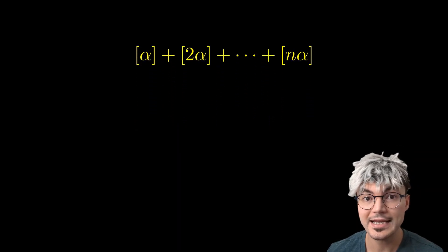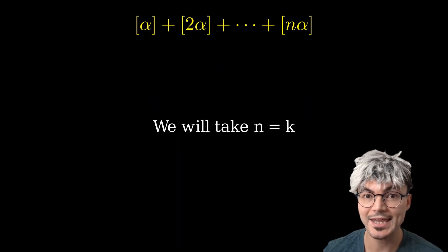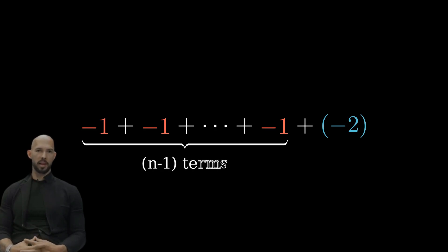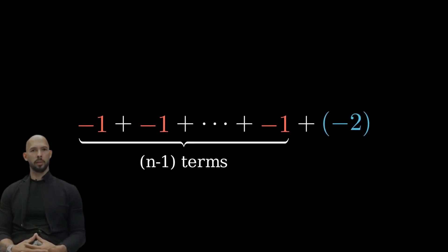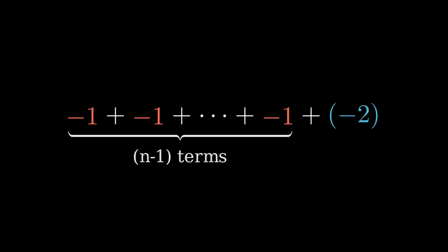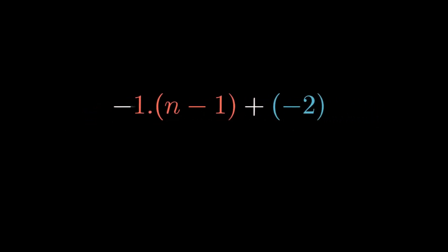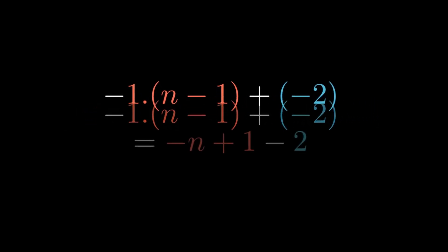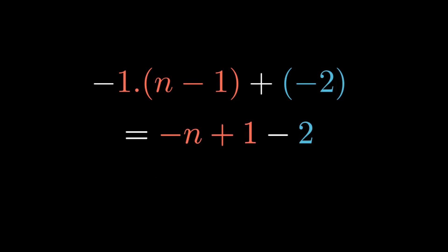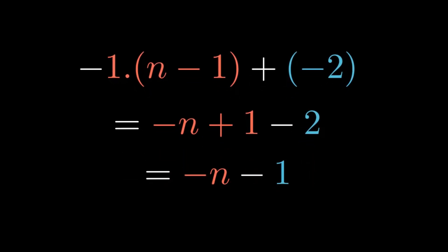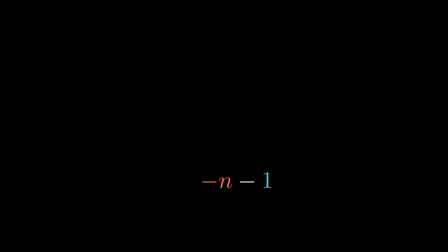Now we have a better understanding of our sum. Let's go back to it. We will take n equals k. Listen up. Now we understand our initial sum very well. It is the sum of minus 1, n minus 1 times, and minus 2. Computing this sum turns out to be minus 1 times n minus 1 plus minus 2, which is minus n plus 1 minus 2, which is minus n minus 1. And this is not divisible by n. So alpha cannot be in the interval minus 1, 0.